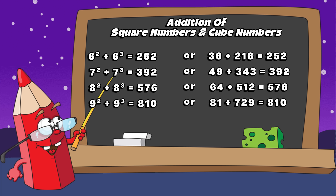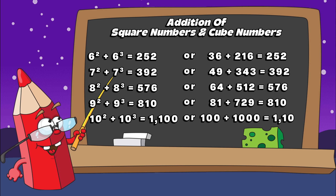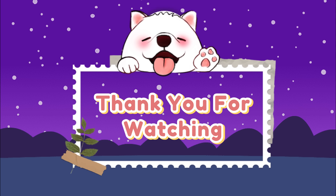Ten square plus ten cube equals one thousand one hundred. Or one hundred plus one thousand equals one thousand one hundred.